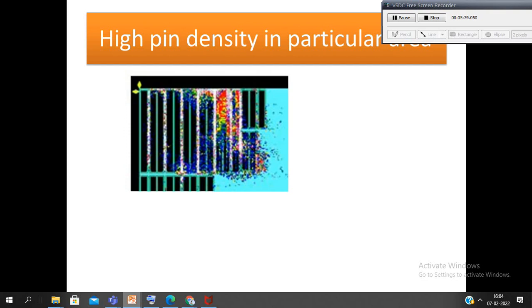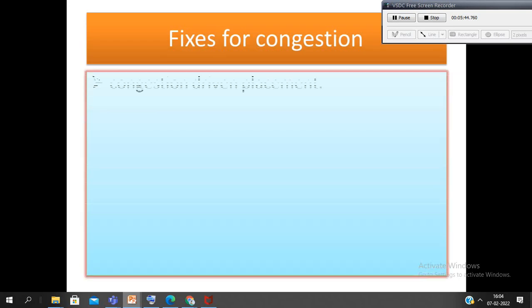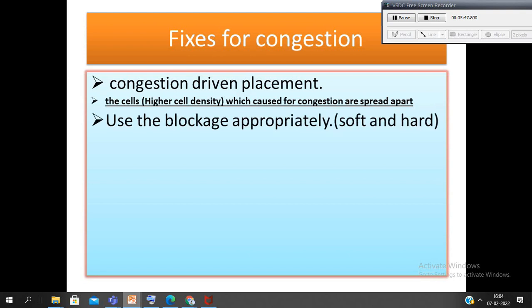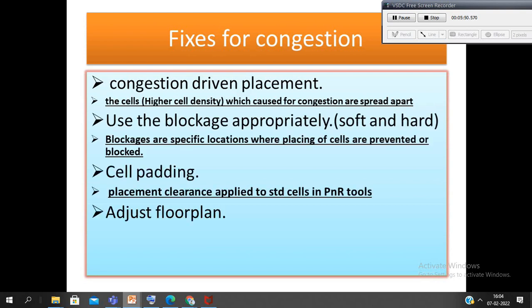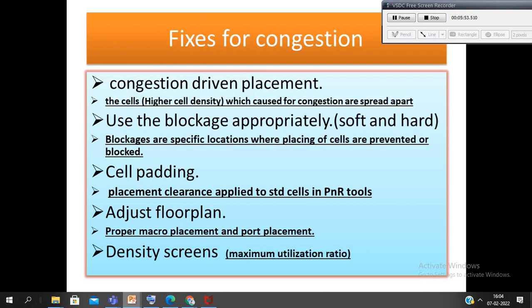Below are a few techniques for fixing of congestion. First one is congestion driven placement. During congestion driven placement, the cells having higher cell density which cause for congestion are spread apart. If the cells along timing critical paths are spread apart, the timing constraint along that particular path may not be met, which causes timing violation. If you want to know how we can use it in the tool, just ping me in the comment section. I will give you all the commands in the comment section.